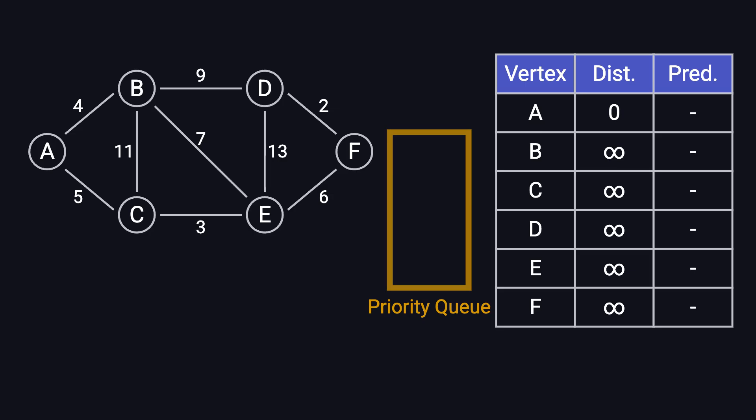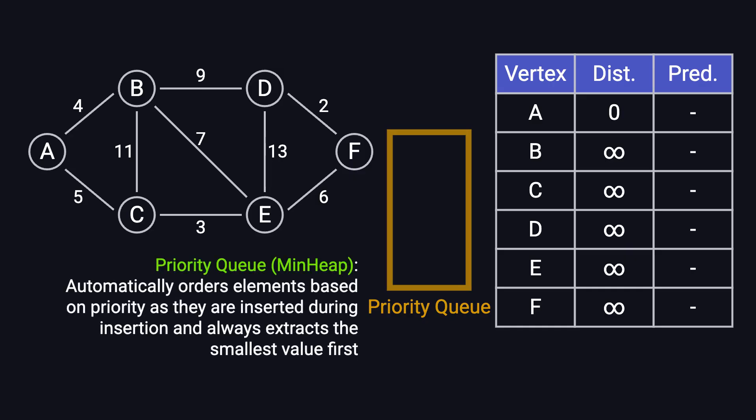This process repeats until all reachable nodes have been processed. So, what exactly is a priority queue? Simply put, it's a data structure that automatically orders elements based on priority as they are inserted. In our case, the smaller the distance, the higher the priority. A common implementation is a binary heap, which allows us to efficiently extract the smallest element.